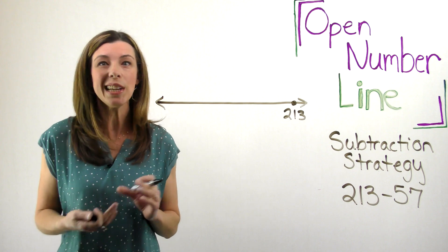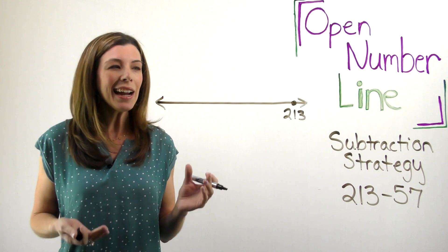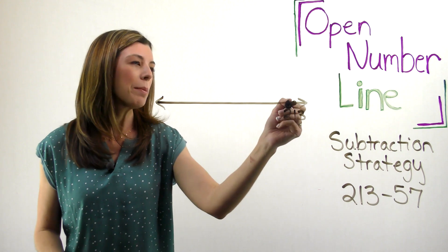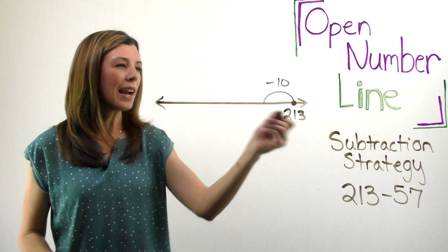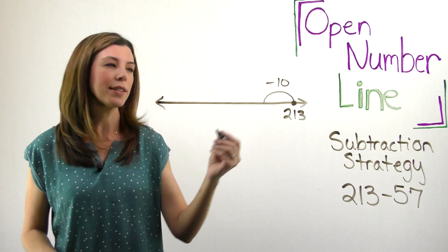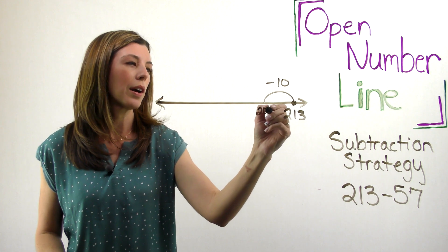So something you might see a student do is just to subtract by 10. I know how to subtract 10. So I'm going to start with that. So I'm going to subtract 10 and now I know that 213 minus 10 is going to give me 203.